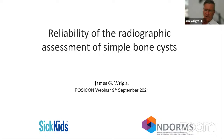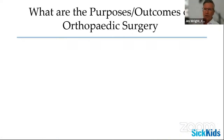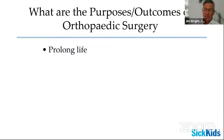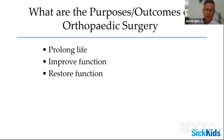I'll start with some broad concepts that place simple bone cysts into the orthopedic treatment framework, then discuss the research, and end with practical conclusions. Why do we do orthopedic surgery? We are prolonging life in some cases, improving function in adult orthopedics, restoring function, and — something very common in pediatric orthopedics — preventing future decline. An osteosarcoma requires surgery to prolong the child's life; late-stage degenerative hip arthritis requires surgery to restore function.